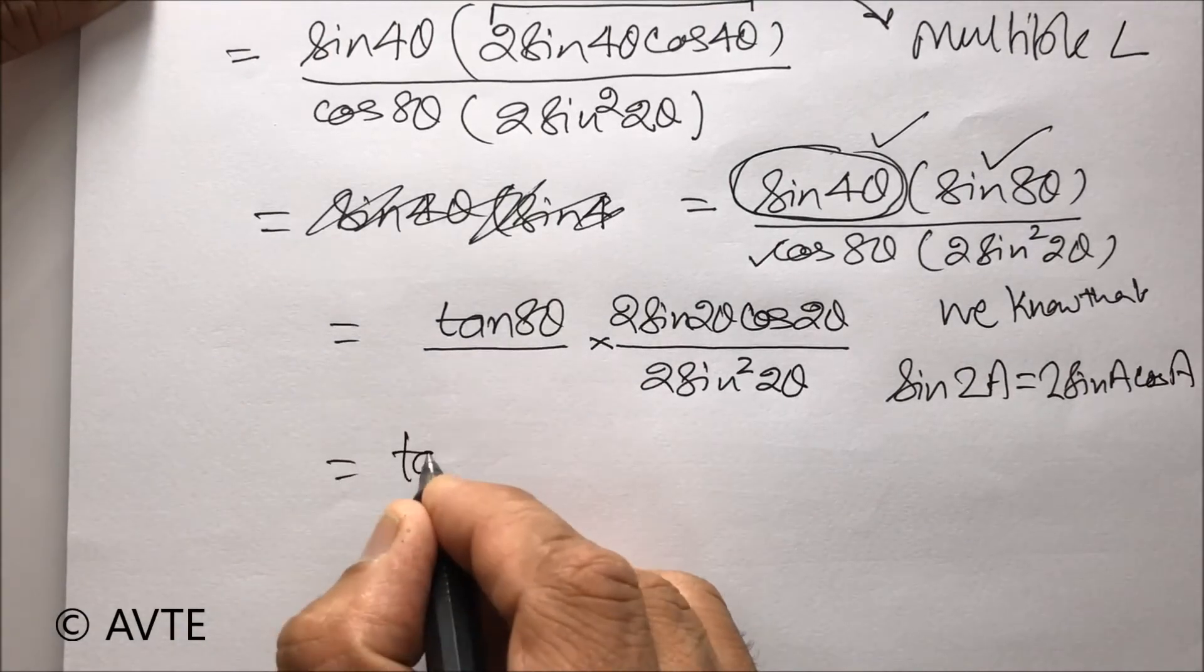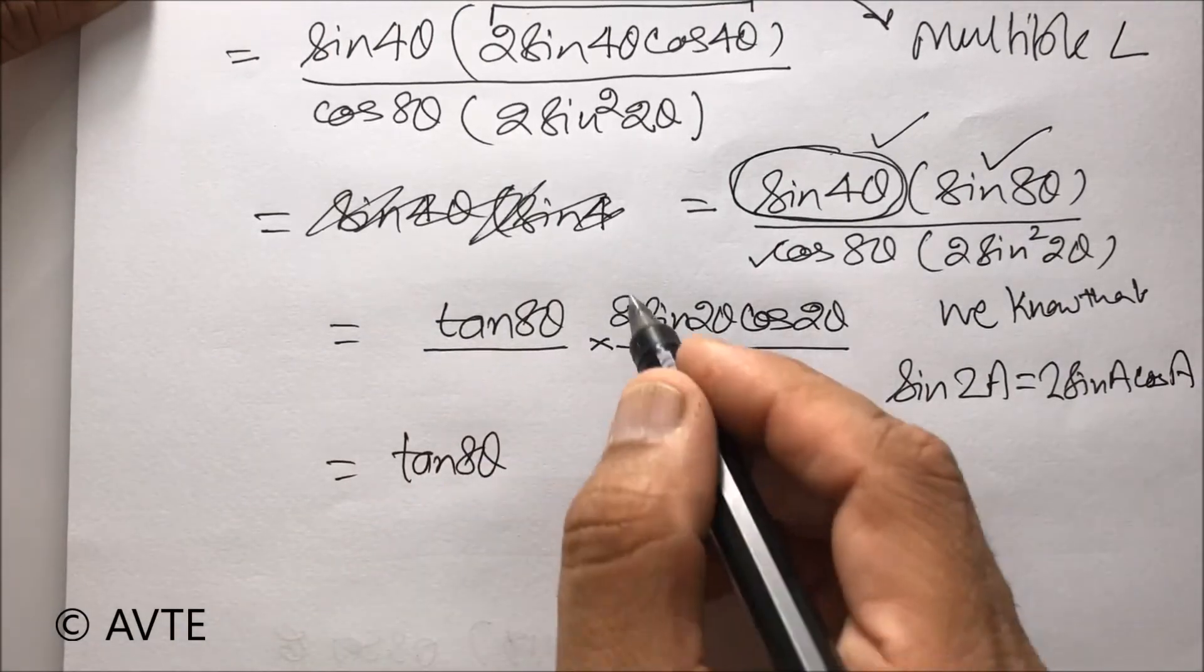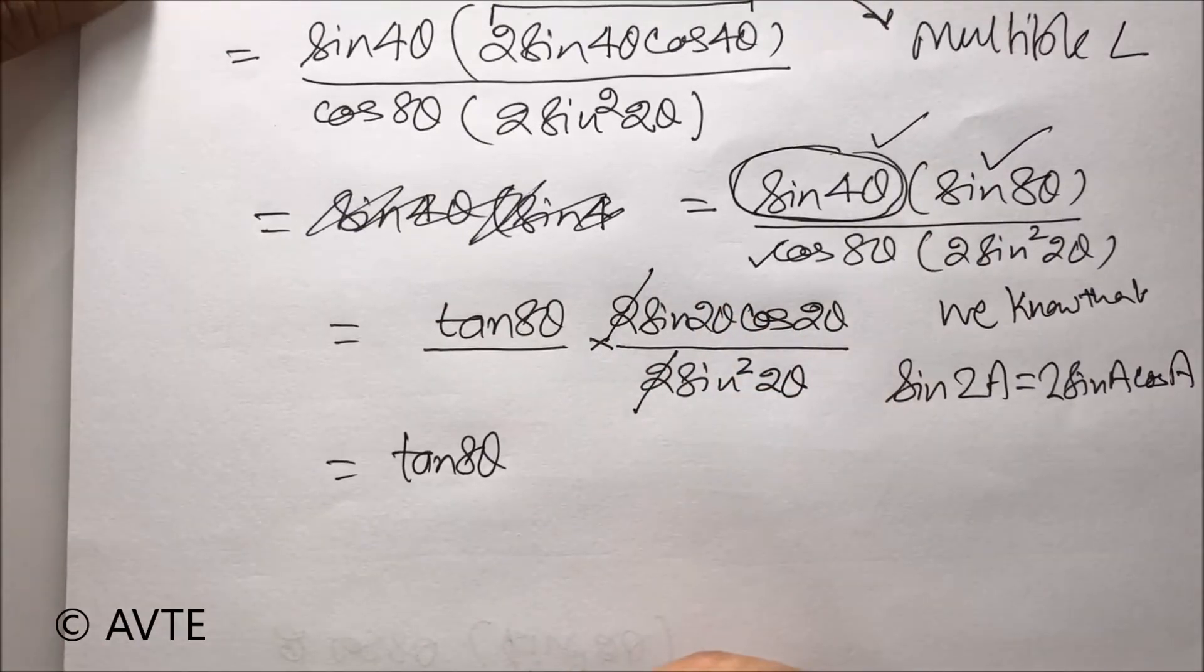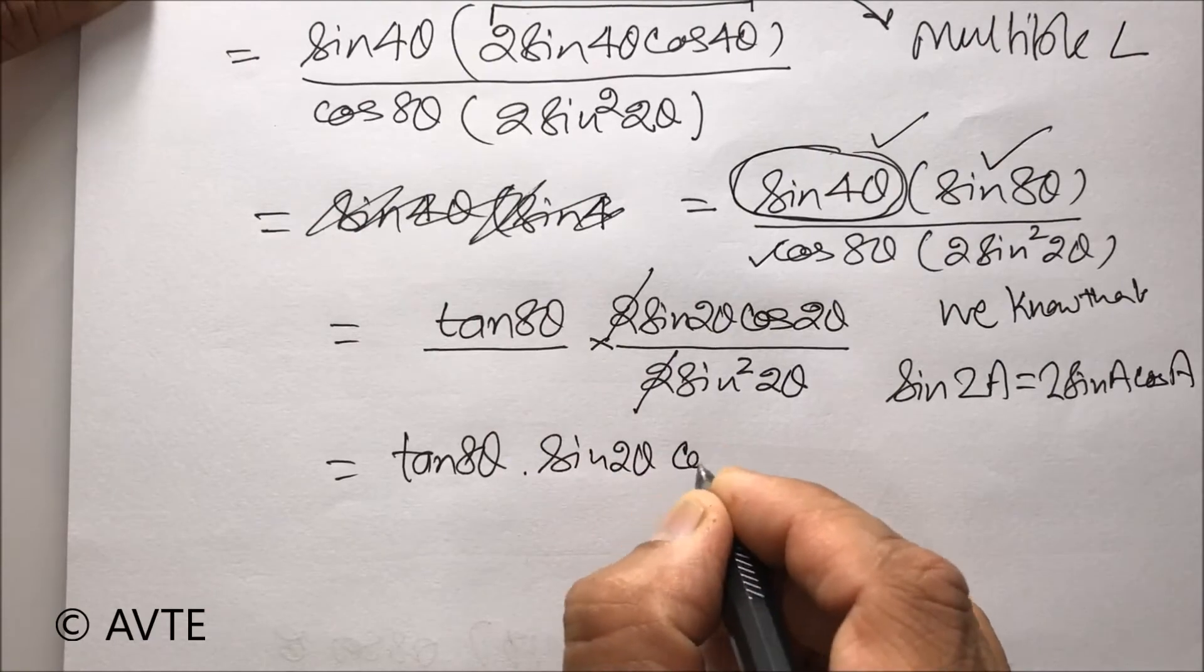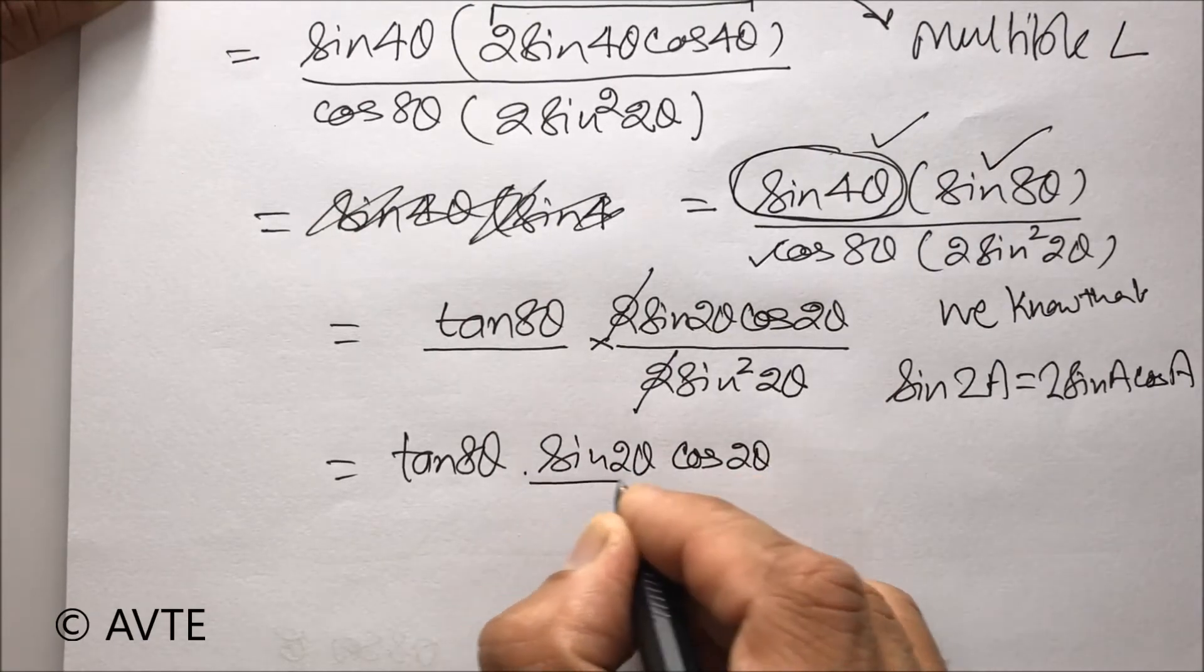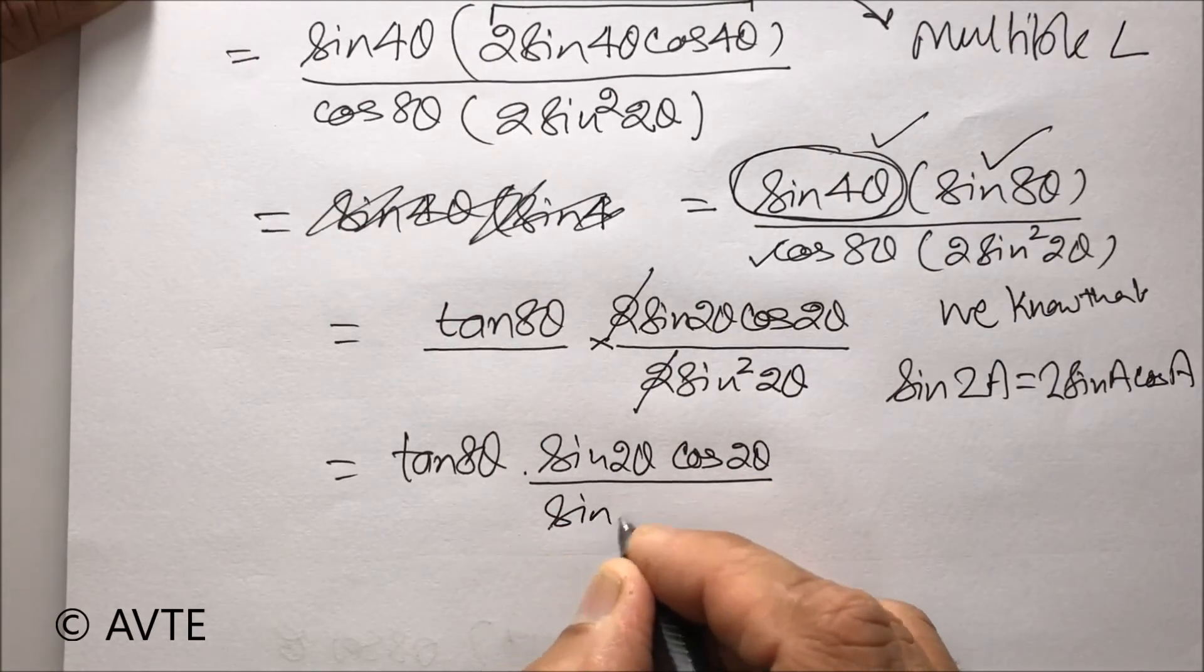Now, we are almost reaching the answer. This 2 and this 2 is gone. One of the sine 2 theta is gone. Because, down in the denominator, we have sine square 2 theta.